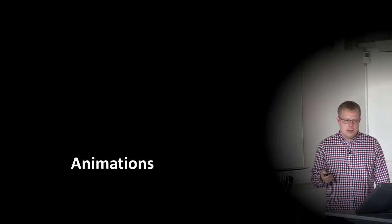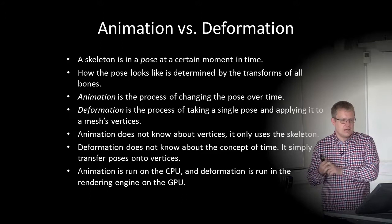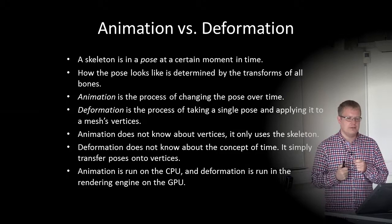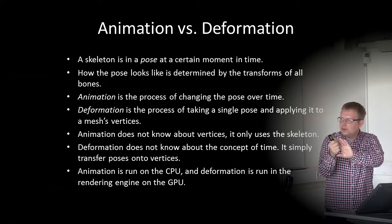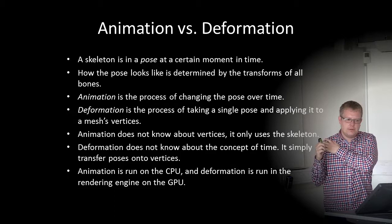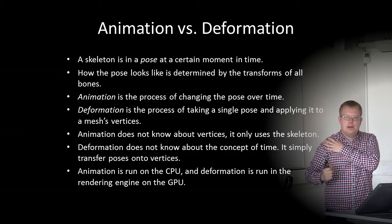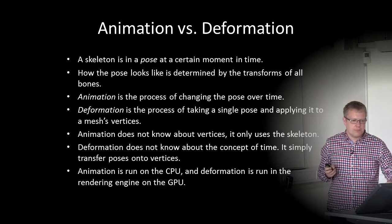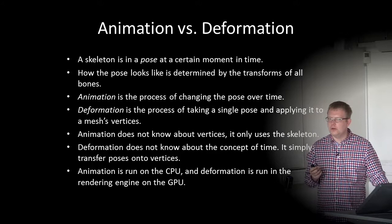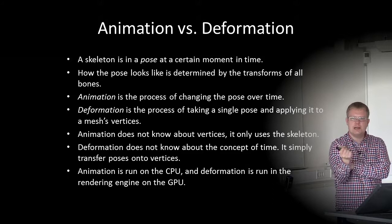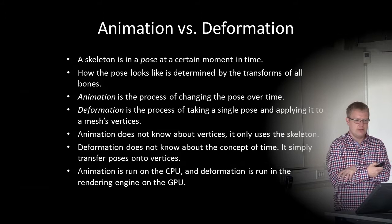So how do we animate when we have a skeleton? A skeleton is in a pose at a certain moment in time. How a pose looks is determined by the transforms of all bones. Animation is the process of changing the pose over time — changing the translation and orientation of joints in the skeleton. Deformation is the process of taking a single pose and applying it to a mesh's vertices, since we may need to change how a 3D model looks depending on the animation state.